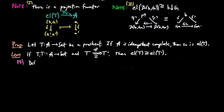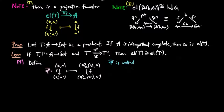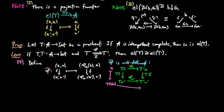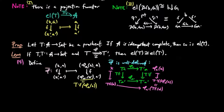For the proof, we define the functor phi-bar, which takes a morphism F from XA to X'A' in the category of elements of T to F from phi(A)(X)(A) to phi(A')(X')(A') in the category of elements of T'. Phi-bar is well defined by the naturality of phi, so that we see phi(A')(T'(X)) is equal to T'(F)(A')(X), and T'(F)(X) is equal to X' by the definition of morphism F in the category of elements of T. So phi-bar is well defined.